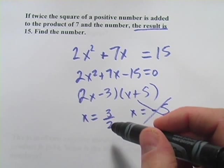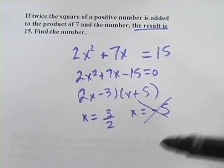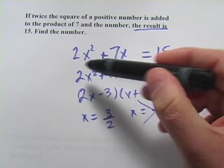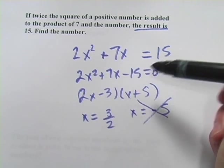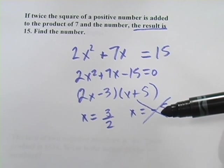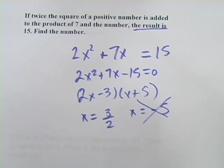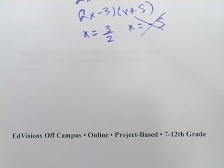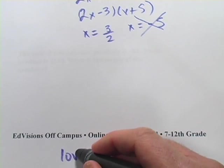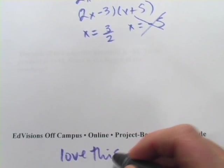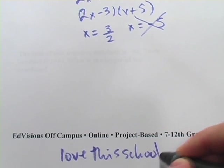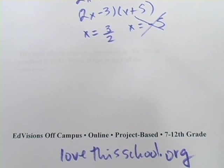And if you're concerned that that really works or not, you can go ahead and plug it back in for x. You'll find out 2 times 3 halves squared plus 7 times 3 halves does indeed equal 15. My name is Larry. I'm a teacher at EdVisions off-campus. It's an online project-based school in Minnesota. If you're interested, you can check us out on the web at lovethisschool.org. Thanks.